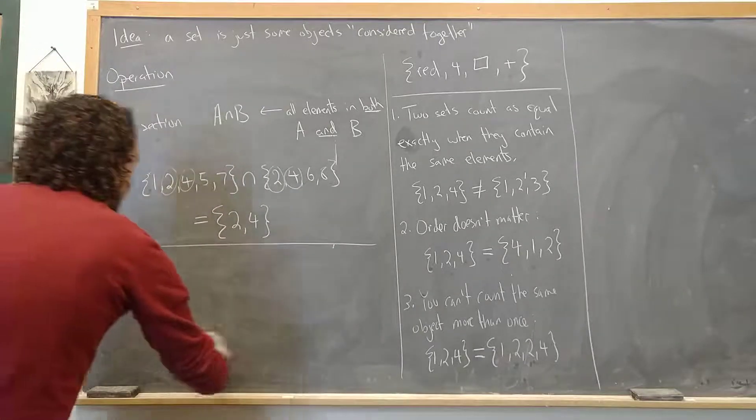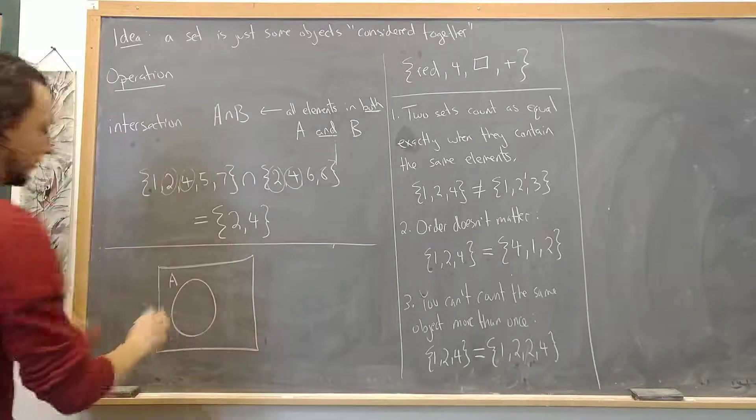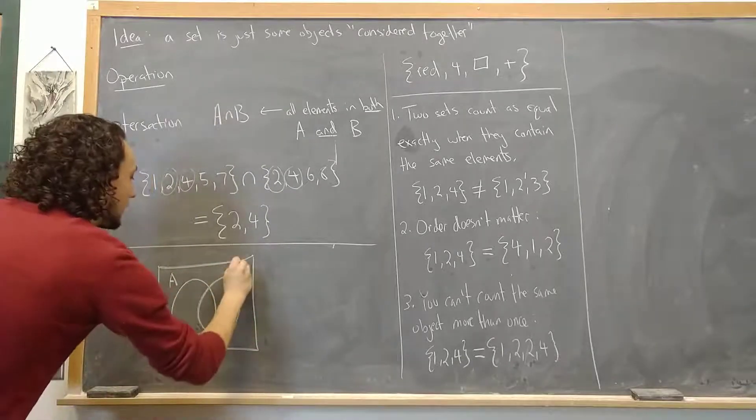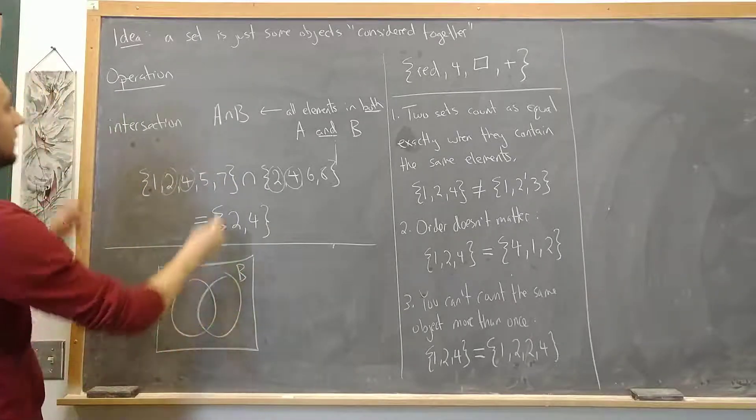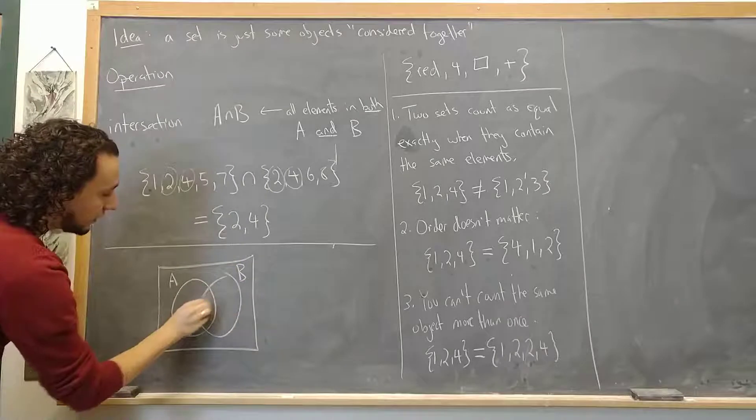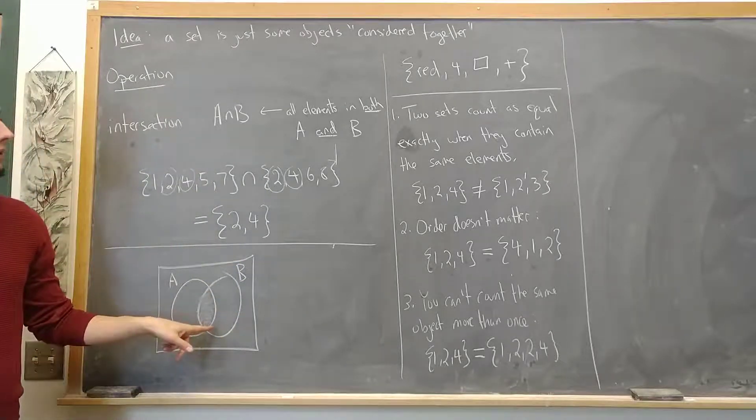And the picture of that that you often see is if you have two sets and I draw it sort of graphically, the intersection. This is my set A and this is my set B. The intersection is everything which is in both A and B, this overlap here.